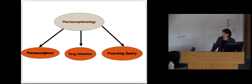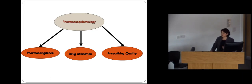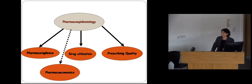Pharmacoepidemiology comes from both Pharmacology and Epidemiology — it bridges those two sciences together and applies epidemiological reasoning and methods to pharmacological issues. This schematic shows the types of research we do using Pharmacoepidemiology. It's used for pharmacovigilance — looking at how medicines are used safely — drug utilization, quality of prescribing, and pharmacoeconomics.